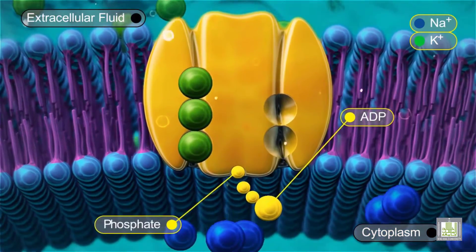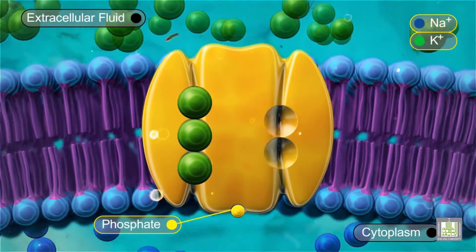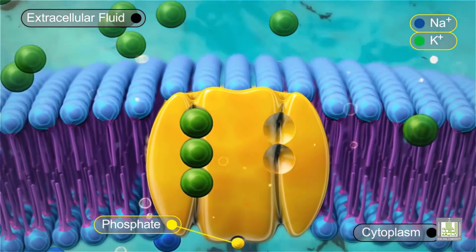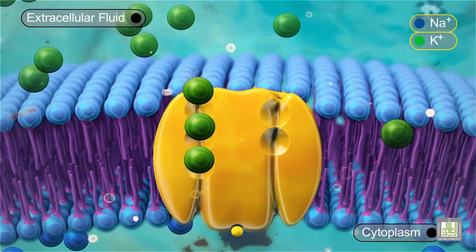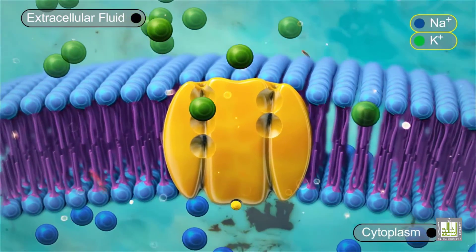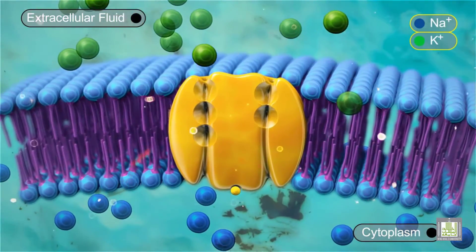The ATP is broken down to ADP and phosphate. Simultaneously, the carrier protein changes shape and the sodium ions are transported across the membrane and released on the outside.